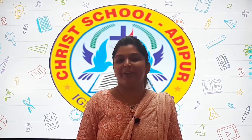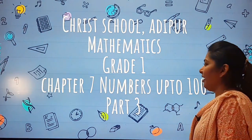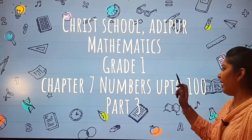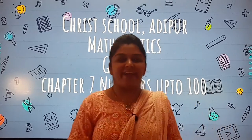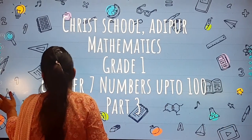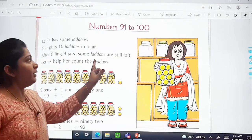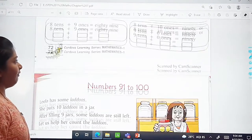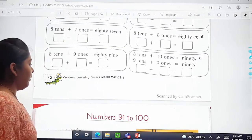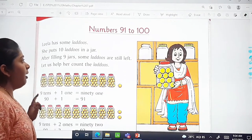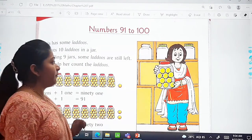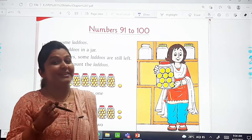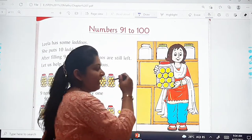Good morning, dear children! Welcome back to your Maths class. Today in Maths we are going to do Part 3 of Chapter 7, that is Numbers up to 100. So open your textbook to numbers from 91 to 100. In the previous video lesson we learned numbers up to 90; now in this video lesson we will learn numbers from 91 to 100.